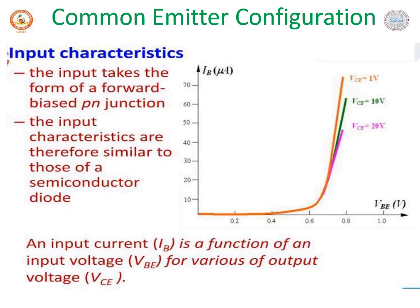VBE is varied in suitable steps and at each step the IB value is recorded. This procedure is repeated for different values of VCE. With an increase in VCE, the depletion region at the reverse-biased collector-base junction widens, which reduces the base width. This reduction in base width due to increase in VCE is called base width modulation, also known as the Early effect.